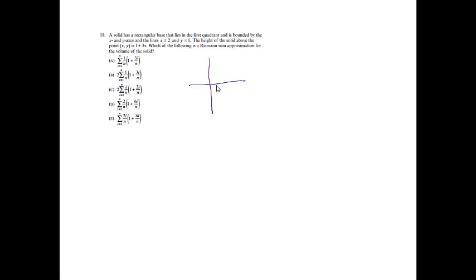Number 18. A solid has a rectangular base in the first quadrant bounded by the x and y axes and the lines x equals 2 and y equals 2. The height above any point is 1 plus 3x. Which is a Riemann sum approximation for the volume? I first drew the picture. Since we're covering a length of 2 and separating into n rectangles, the width of each rectangle is 2 over n. I looked for which choices gave 2 over n, and noticed B and D both had 2 over n.